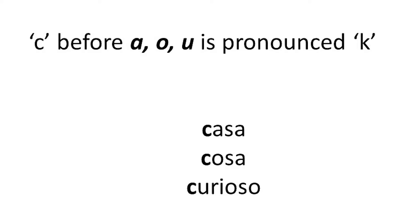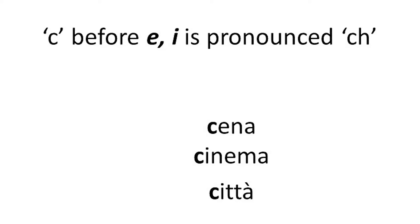So we have casa, cosa, curioso. When the C comes before E or I, it's pronounced CH. So we have cena, città, cinema.